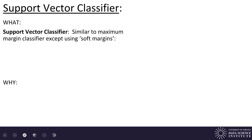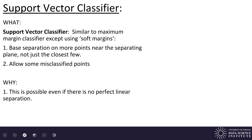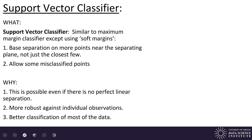Here's the support vector classifier. We're going to do something similar to the maximum margin classifier except use soft margins. With soft margins we base separation on more points near the separating plane, not just the closest few, and we also allow some misclassified points if we have to. This allows us to do classification even if there's no perfect linear separation. It's also more robust against individual observations because we're computing the separation hyperplane across a larger number of data points, and individual data points won't cause as much error. This also results in better classification of most of the data.